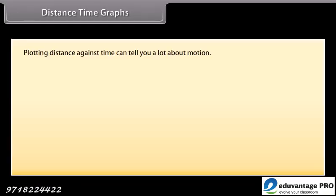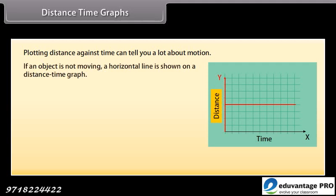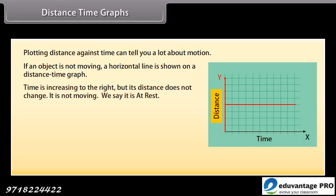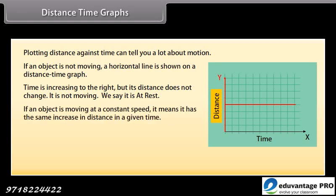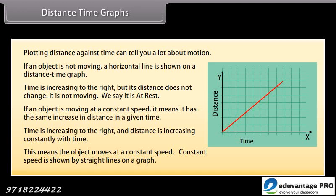Distance-time graphs. Plotting distance against time can tell you a lot about motion. Time is always plotted on the x-axis and distance on the y-axis. If an object is not moving, a horizontal line is shown — time increases but distance does not change, meaning the object is at rest. If an object is moving at a constant speed, it has the same increase in distance in a given time, shown by a straight line where distance increases constantly with time.